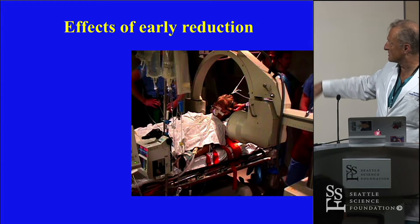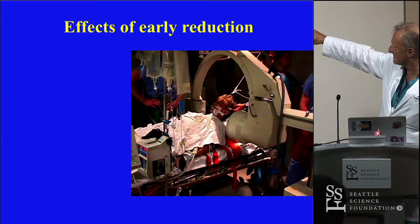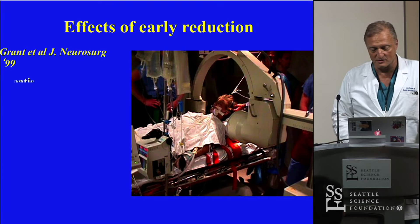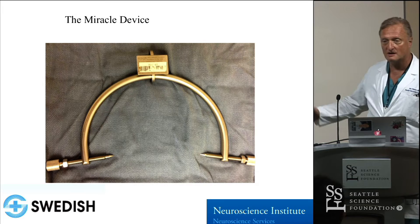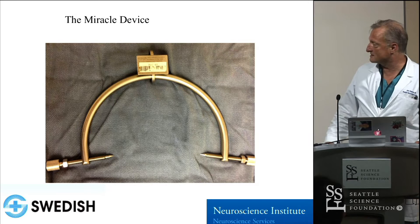Early reduction — we've published on this, and several others have as well. You don't need a C-arm, but you need a traction setup with neck flexion to make this happen. You need a simple protocol. Several publications support this, one from Harborview. This is miracle device number one: Gardner-Wells tongs. We prefer those over Crutchfield tongs. They cost about $200 and have a little pop release — a very helpful device.